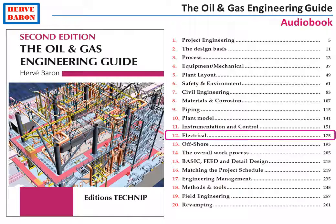Welcome to Chapter 12 of the Oil and Gas Engineering Audiobook. This chapter presents the work and deliverables of the electrical discipline. The electrical discipline is in charge of sizing, specifying, and selecting all the plant electrical power generation and distribution equipment. It is also in charge of producing all documents which are necessary at site to install this electrical generation and distribution equipment.